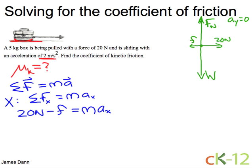Well, we know the mass of the box and its horizontal acceleration. So let's plug those in. Five kilograms for the mass and the acceleration is two meters per second squared. Well, five times two is ten and a kilogram meter per second squared is a Newton.